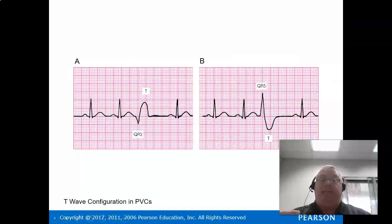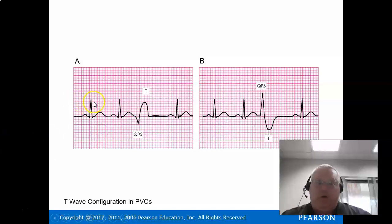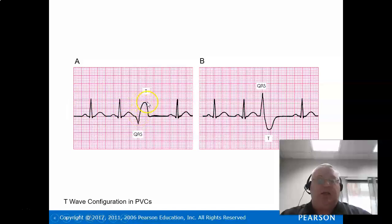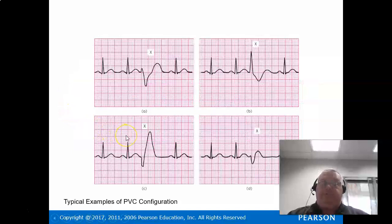There's a lot of different morphology with a PVC, strictly based upon where it comes from. The key to identifying them is they're usually wide compared to the normal complexes. Look at this one — it has a QS complex and the T wave goes right into a T wave. It's coming from the bottom part of the heart, it's wide, it looks funny compared to the other beats.